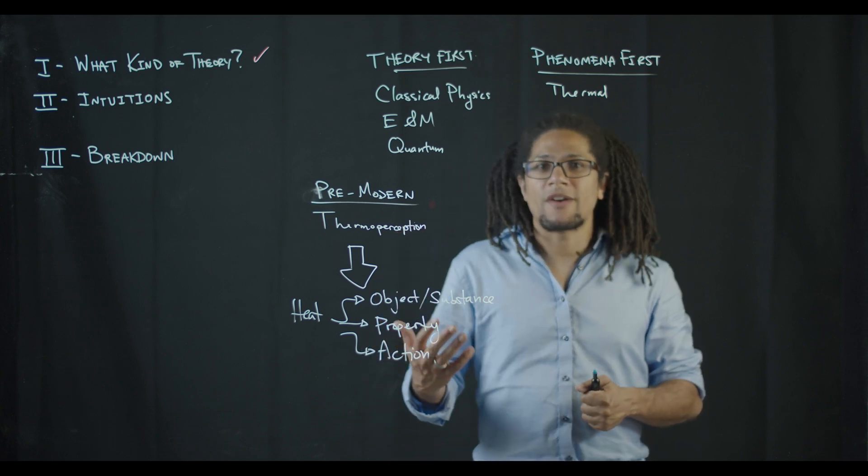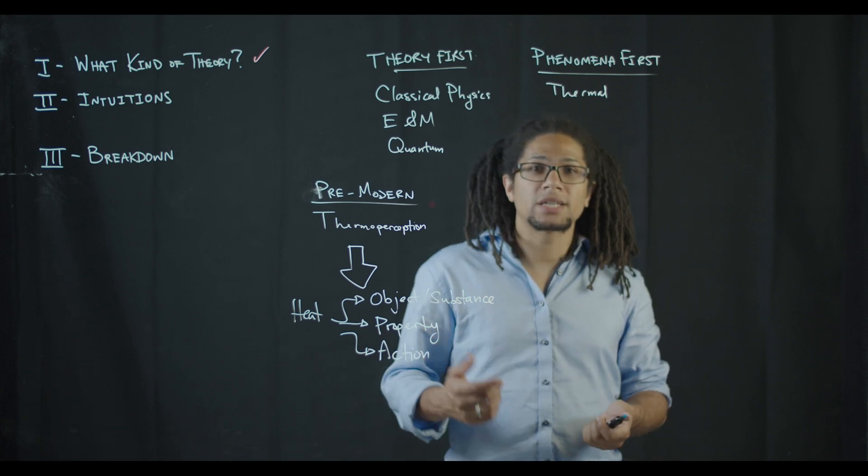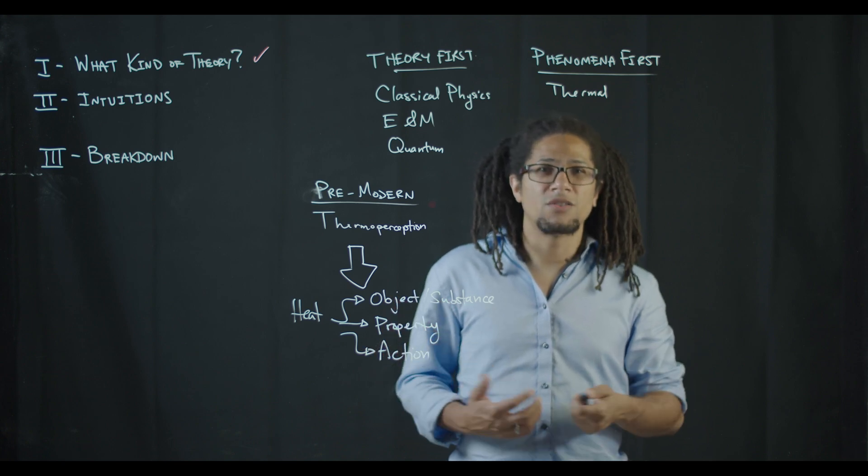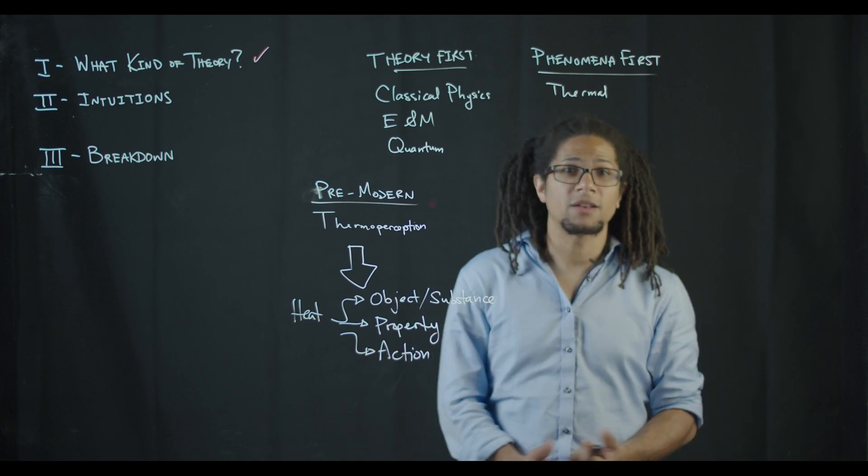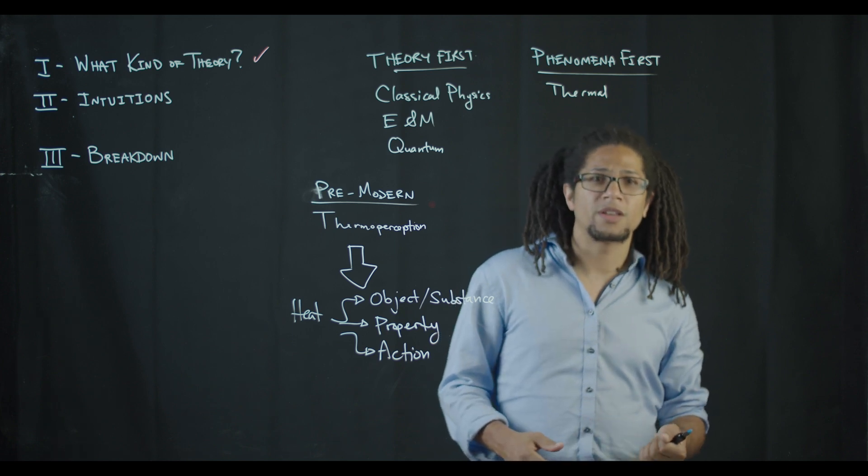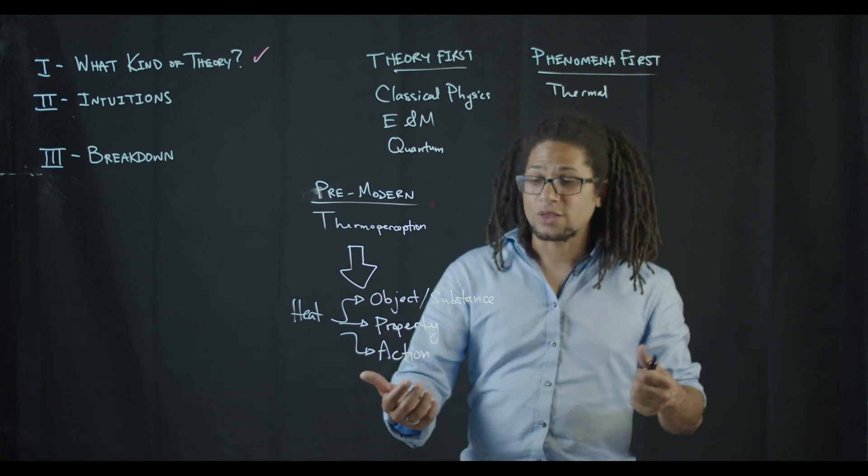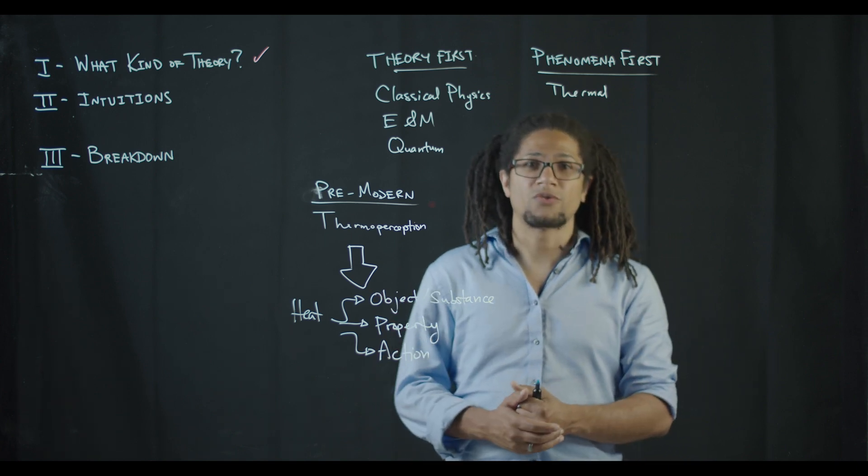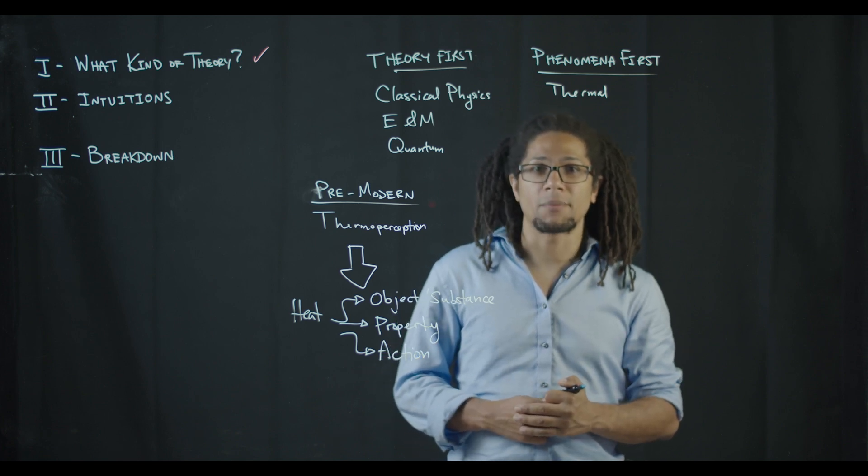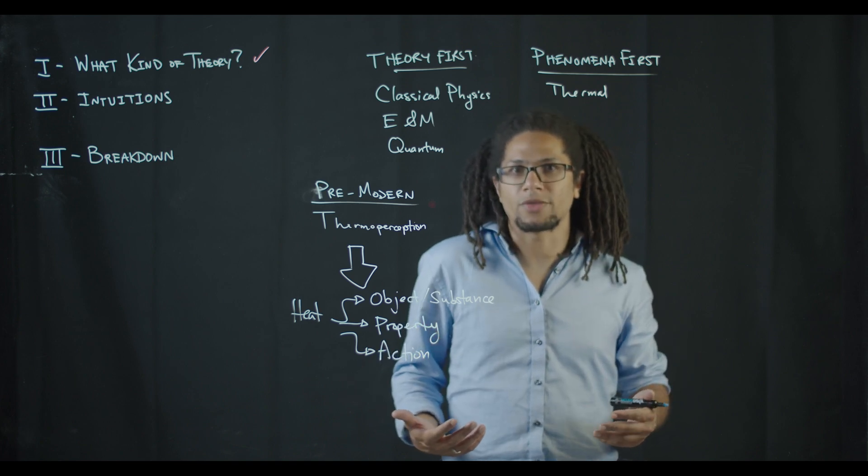Now, all three of these have had proponents throughout the years. For instance, the object theory was really at the heart of the theory of caloric that became en vogue in the first half of the 19th century. Whereas the heat as a property of objects, I think, is what's intuitive to a lot of people. It turns out that the heat as action concept is really more at the heart of modern theories of thermodynamics. But I do really want you to interrogate what your own intuitions are about this.